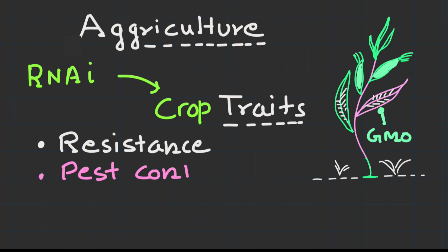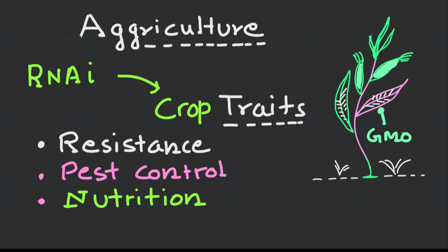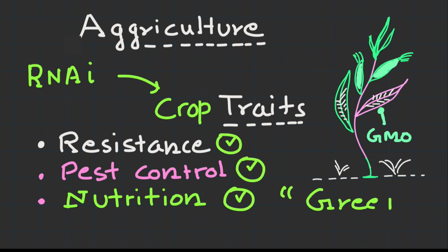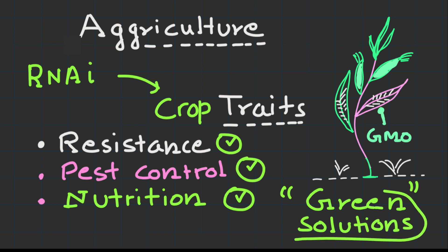RNAi-based approaches have shown promise in improving crop traits such as disease resistance, pest control, and enhanced nutritional content. Targeting specific genes in pests or pathogens using RNAi can offer environmentally friendly solutions for crop protection.